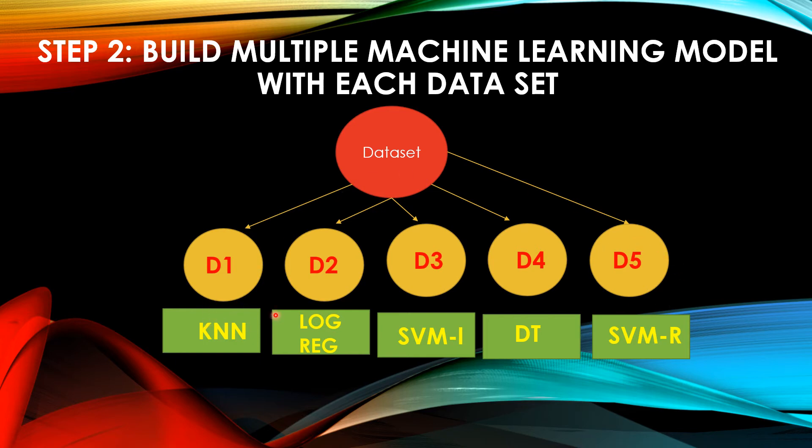Now we are going to build a KNN model for the dataset D1. We are going to build a logistic regression model for D2. We are going to build a SVM with linear kernel model for D3. We are going to build a decision tree model for D4. And we are going to build a SVM RBF kernel for D5. Remember that all these models are built parallelly. All these models have equal weights.